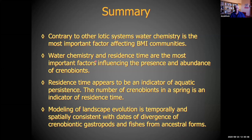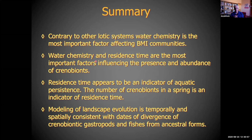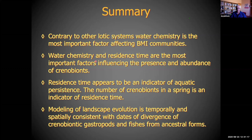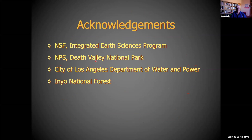In summary: in reference spring systems, water chemistry is the most important factor affecting BMI communities. Water chemistry and residence time appear to be a factor of aquatic persistence — an indicator of aquatic persistence. There's no direct way to tell that old-water springs have persisted for millions of years, but the relationship between the number of taxa in these springs and groundwater age indicates these are the kind of springs that have been persistent for such a long time. The landscape evolution modeling is temporally and spatially consistent with the dates of divergence of gastropods and fishes from ancestral forms. NSF has paid for a lot of this work.